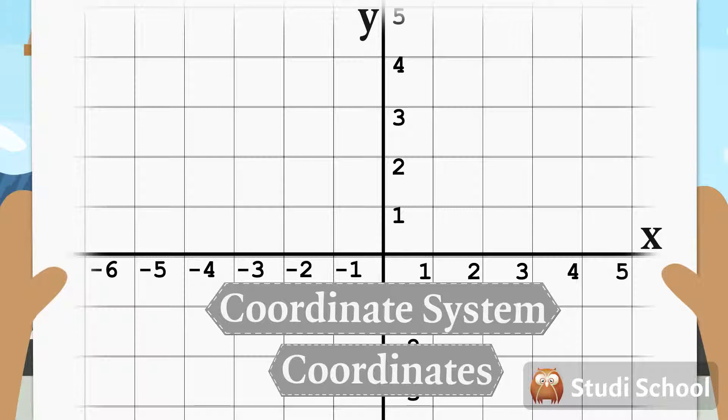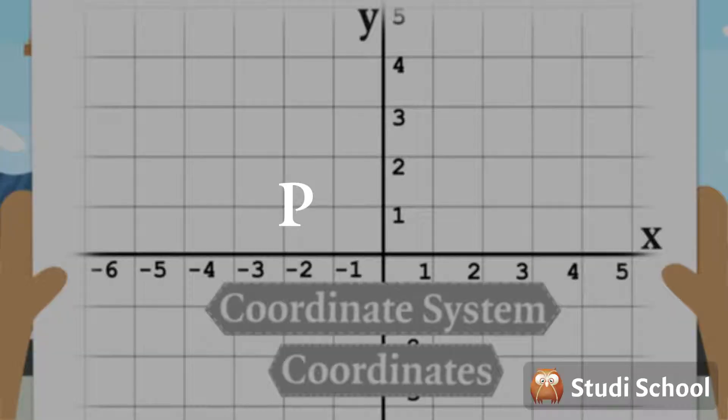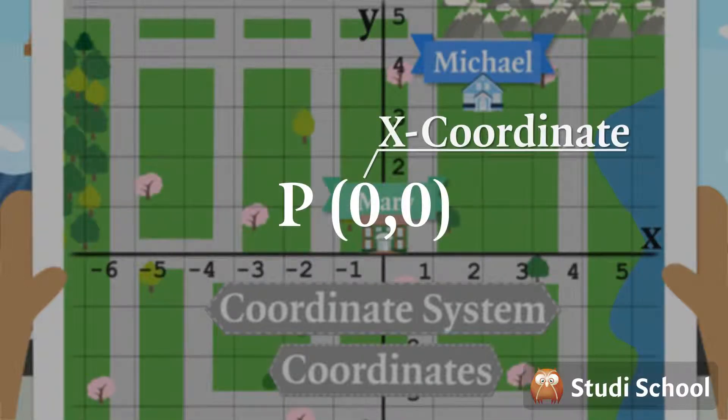The coordinates of a point include how far along the X-axis and how high up on the Y-axis it is. A point is represented by a letter and two numbers in brackets. The first is the X-coordinate and the second is the Y-coordinate.